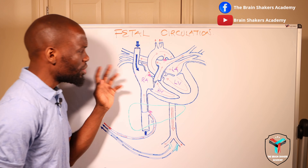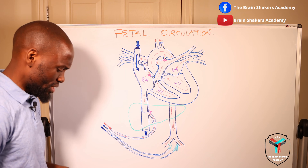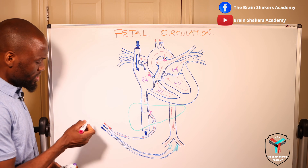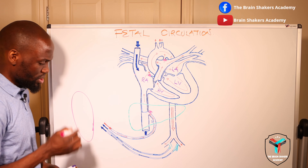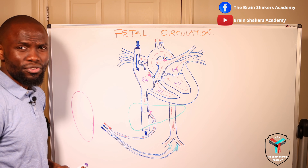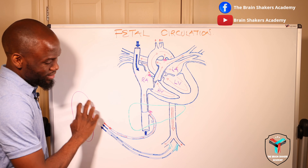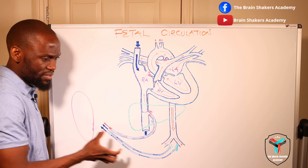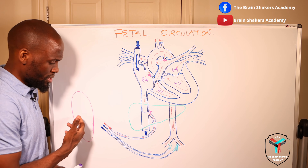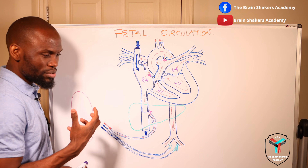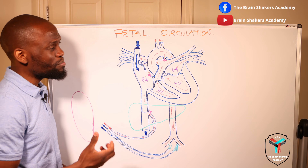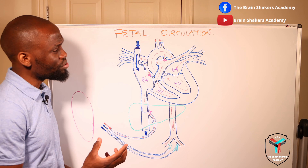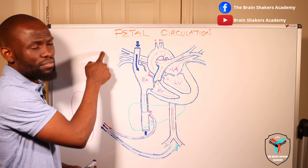I have a diagram here that is going to help us understand the fetal circulation. To begin with, we obviously know that there is a placenta where all the oxygen and relevant nutrients are coming from, and that is why we have a connection between maternal circulation and the fetal circulation. The placenta is a temporal structure created to perform several functions, and one of the key functions it plays is the role of the lungs.